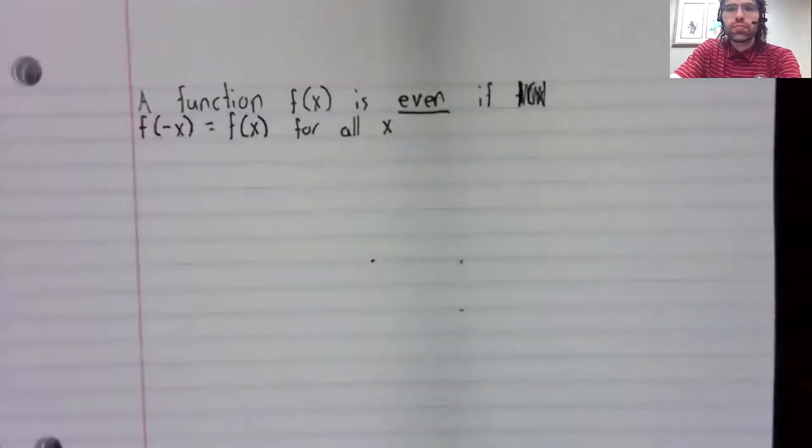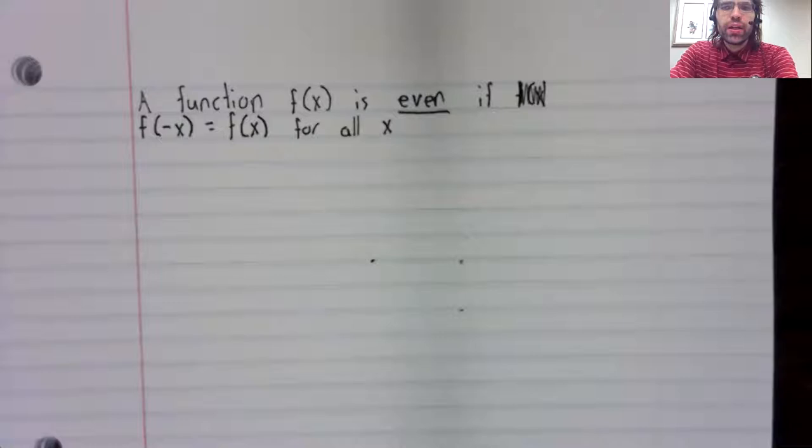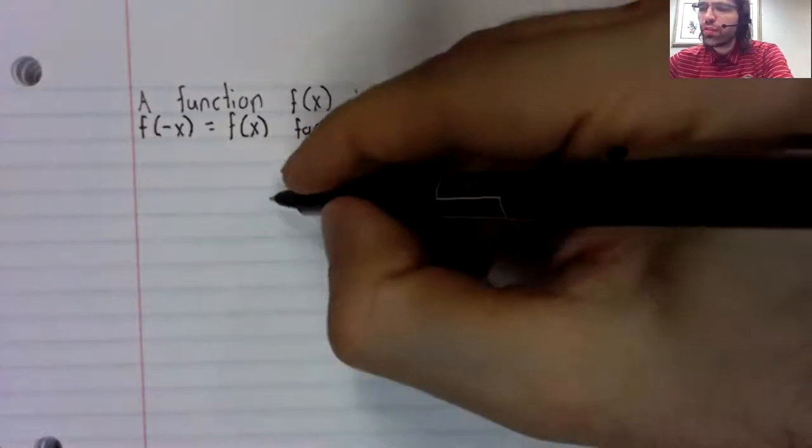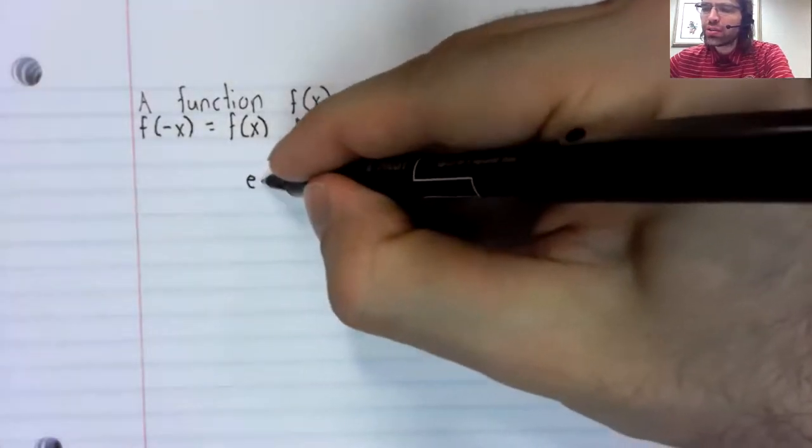Let's define even and odd functions, and then discuss them in the special case of the cosine and the sine. A function f(x) is called even if f(-x) equals f(x) for all x.